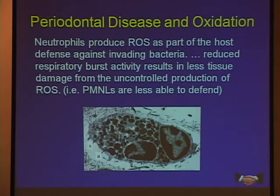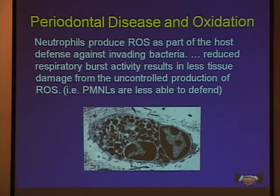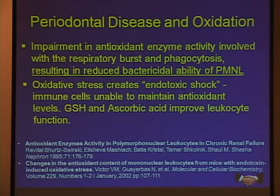It has a useful role in the immune system, because one of the ways that our polymorphonuclear cells and macrophages defend our cells is that they use peroxides generated within the cell as very high oxidizing agents to kill bacteria. The question becomes, what happens when that gets out of control, when there's uncontrolled production of that? For example, with periodontal disease and oxidation, there's an impairment in antioxidant enzyme activity involved with the respiratory burst and phagocytosis, resulting in reduced bactericidal ability of our immune cells.